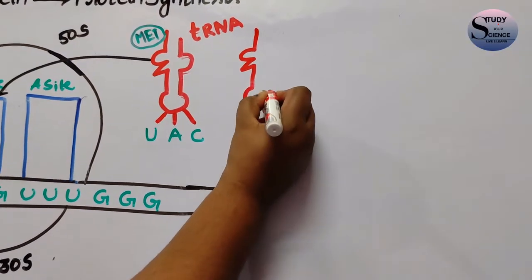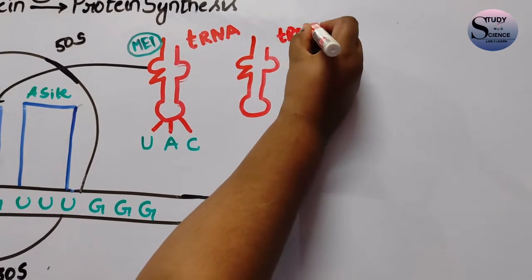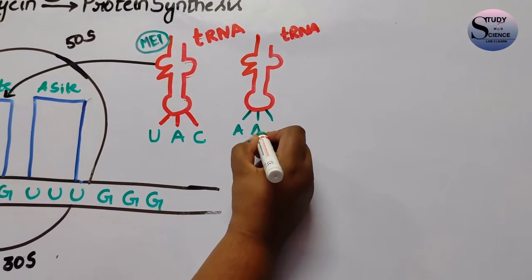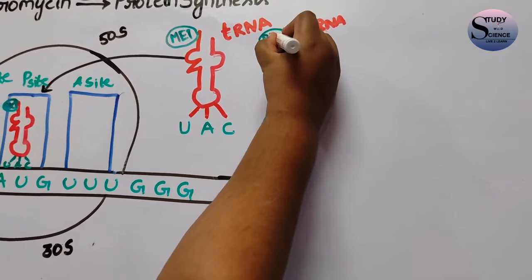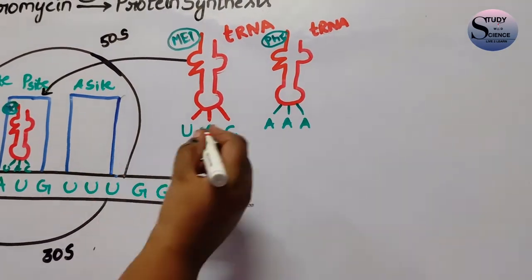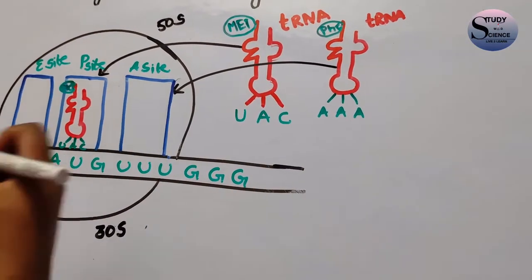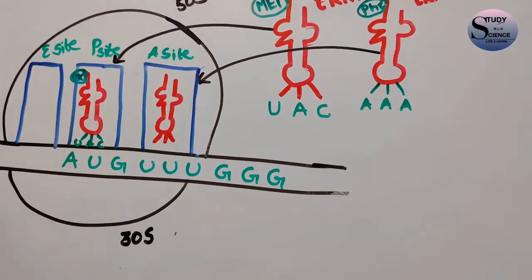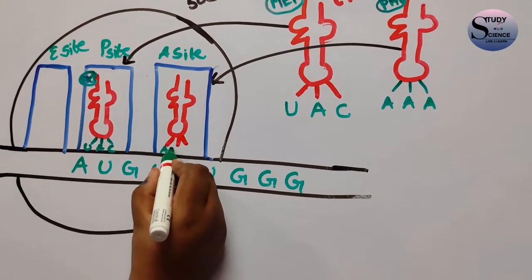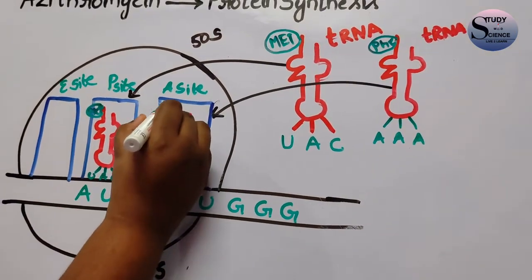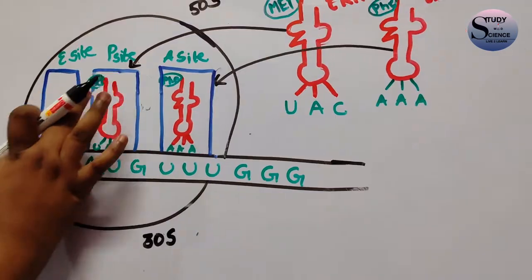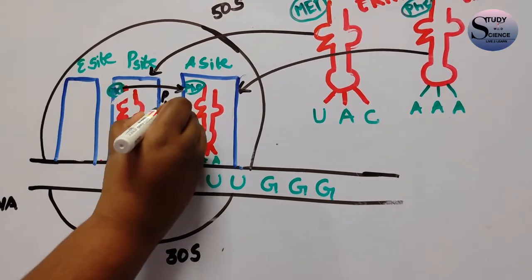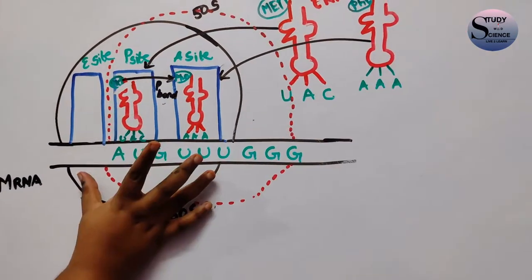There is another tRNA which contains another anticodon present in the mRNA that can code for the codes present in the mRNA, like AAA, and also the amino acid which can code for the specific codes. This now enters into the acceptor site, gets accepted, and enters into the A site. This tRNA binds to the codes present in the mRNA like AAA along with the amino acid. Now the old amino acid gets dissociated from the old tRNA and forms a peptide bond with the new amino acid.